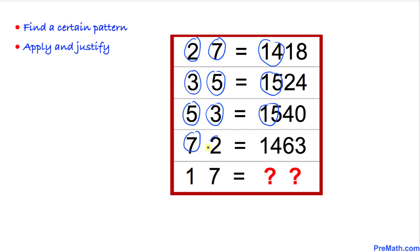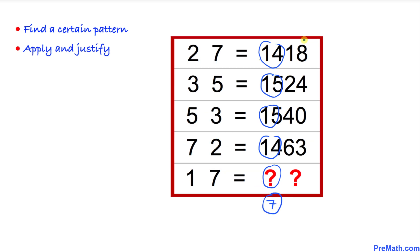7 times 2 is 14. Now let's focus on 17. We're going to multiply these two numbers: 1 times 7 is 7. So this question mark is going to be the number 7. Now let's focus on the next two digits, which is 18. If we look very carefully, we can see a pattern.